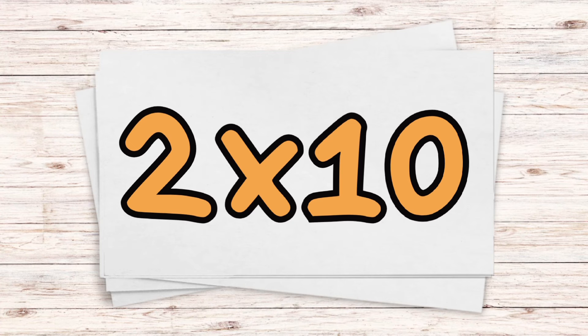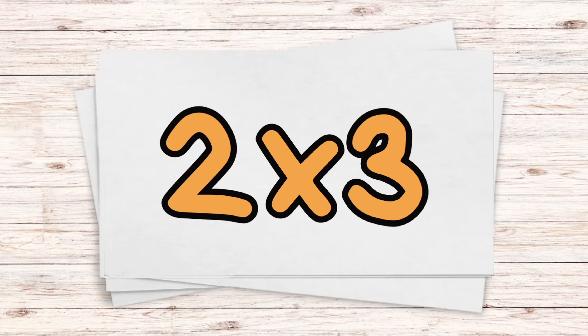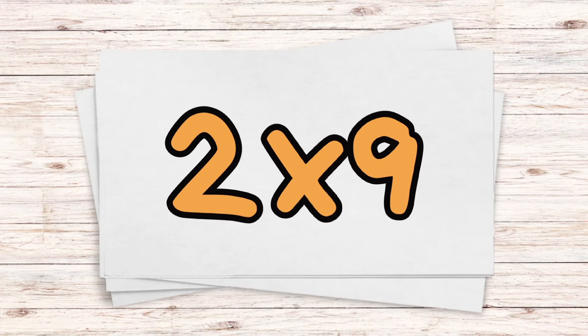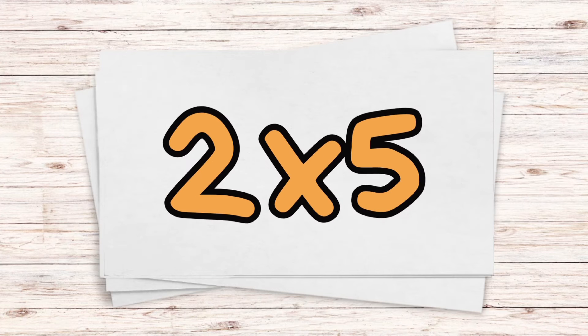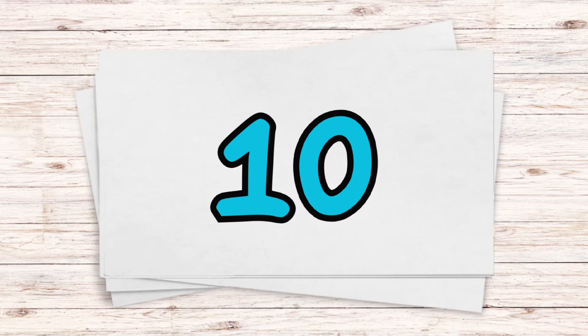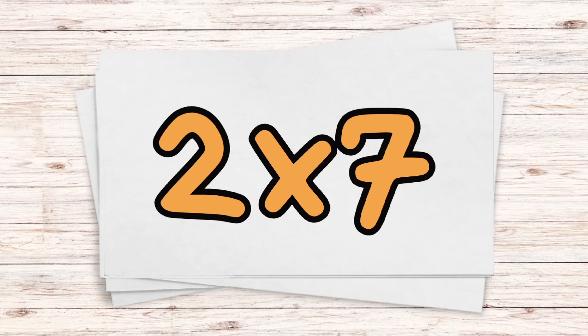Two times ten — twenty. Two times three — six. Two times nine — eighteen. Two times five — ten. Two times seven — fourteen.